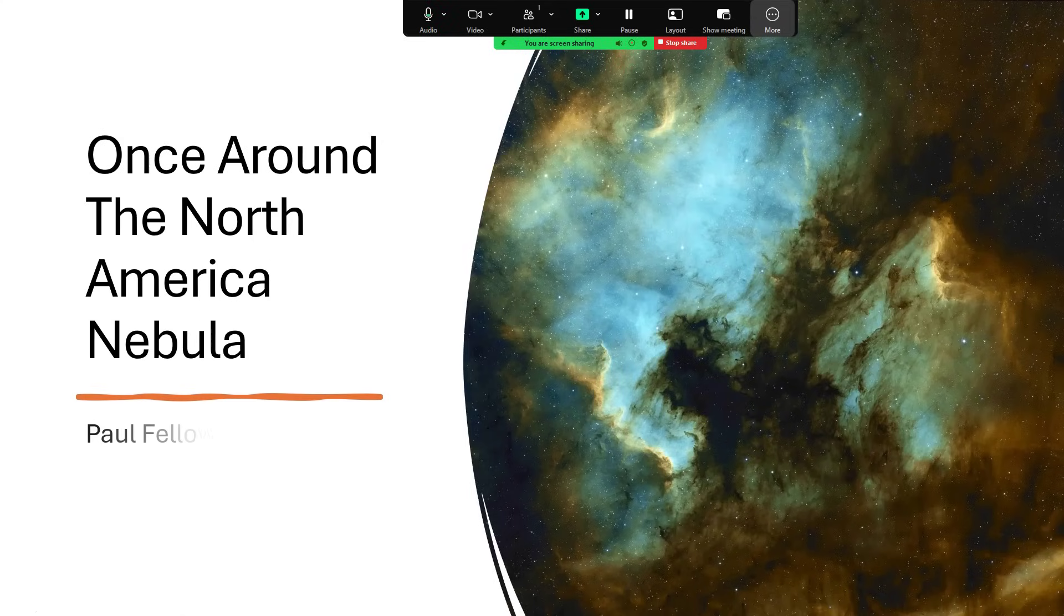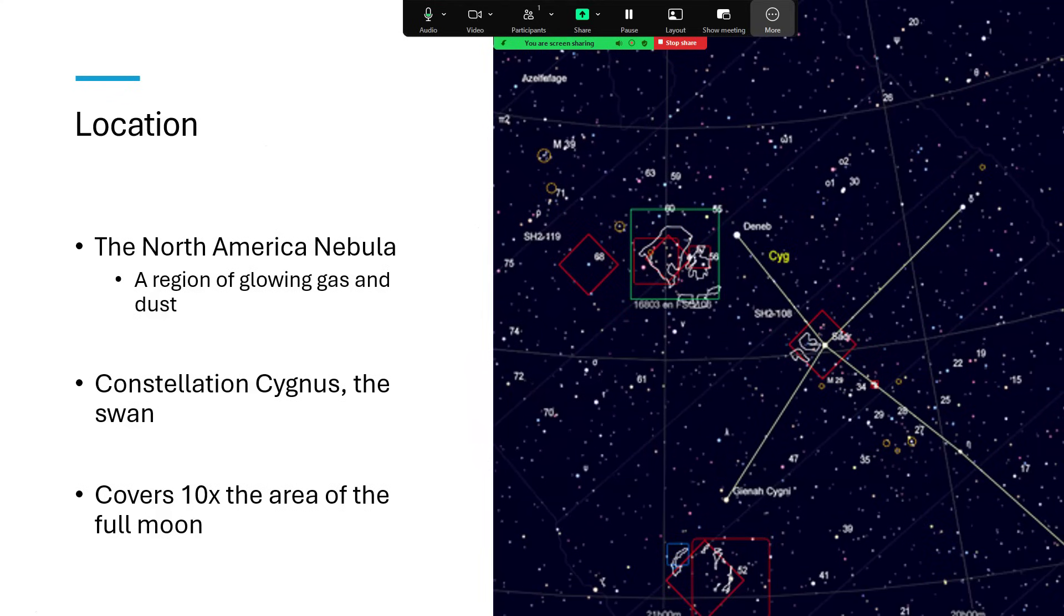Once around the North America Nebula. North America Nebula is a fantastic object to track down if you get the chance. You need quite a wide field of view though.